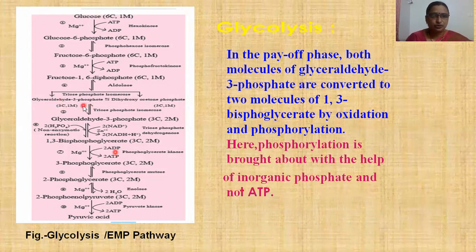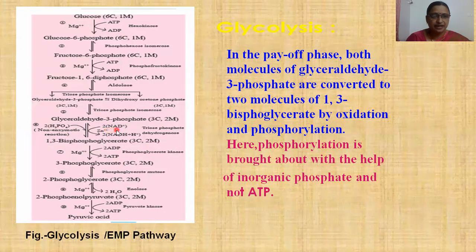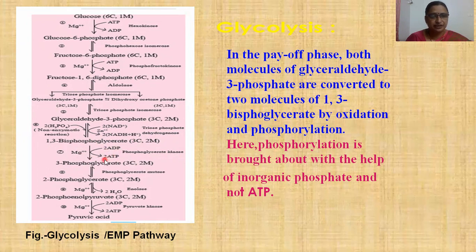In the presence of triose phosphate isomerase, glyceraldehyde-3-phosphate with 3 carbons and 2 molecules is formed. Glyceraldehyde-3-phosphate is converted into 1,3-bisphosphoglycerate, having 3 carbon atoms and 2 molecules. Inorganic phosphate is added in a non-enzymatic reaction. Then 2 NAD+ is converted into 2 NADH2 with the help of enzyme triose phosphate dehydrogenase, requiring Zn++ ions. Then 1,3-bisphosphoglycerate is converted into 3-phosphoglycerate with the help of phosphoglycerate mutase enzyme, requiring Mg++ ions and 2 ADP, which is converted into 2 ATP.